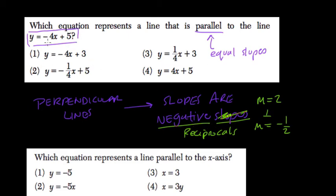Here in this equation, negative 4 represents the slope. Choice 1 is the answer because it also has an equal slope. As long as it has an equal slope, it's parallel.